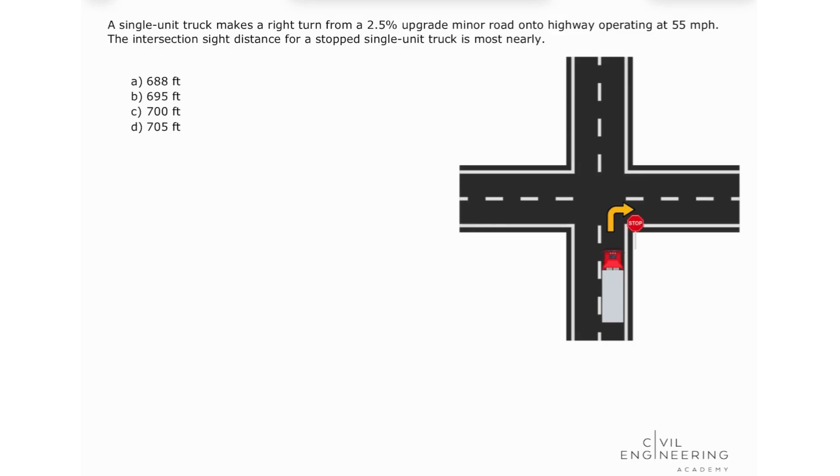Okay, so to solve this problem we're going to be looking at some equations that come from our AASHTO Green Book. This is known as case B2 for a vehicle coming from a minor road and making a right turn into the major road.